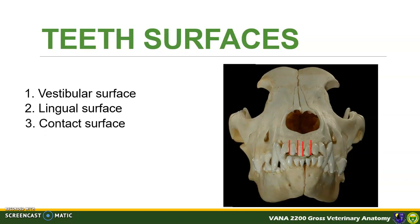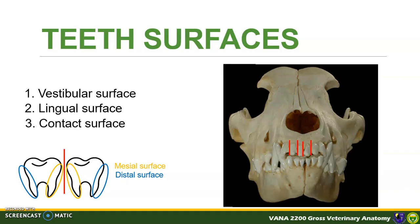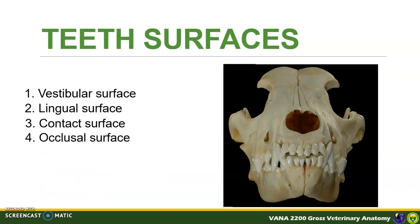Contact surface is the surface of the teeth that faces the adjacent teeth in the dental arch. This contact surface can be classified further as mesial or distal surface. Here are the teeth clip art to imagine the respective contact surfaces, with the midline represented by a red line. Mesial surface is the contact surface adjacent to the next rostral or medial tooth, and the distal surface is the contact surface adjacent to the caudal or the next lateral tooth. Occlusal surface is the surface that faces the ipsilateral opposite upper and lower arch.